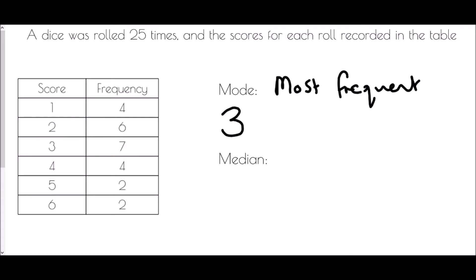For the median, it's often described as the middle number once placed in order, but this can cause problems with frequency tables. People may look at the scores and say the middle is between three and four, or they may look at the frequencies and place those in order to find the middle — but that will not work, because of what the table actually represents.